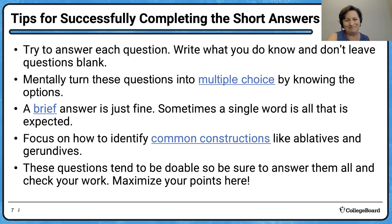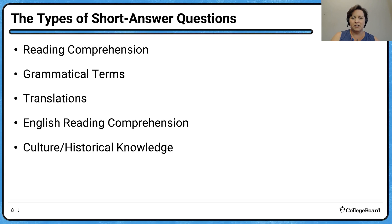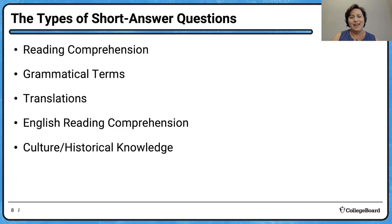Some types of questions you'll encounter: reading comprehension questions where you look at a section and answer what's happening; grammatical terminology questions; translation questions — often paired in A/B format; and short answer questions about English readings or Roman cultural and historical knowledge. For those culture questions, the advice about writing what you know is great — if you don't remember exactly what Egyptian queen is referenced, you know Cleopatra is an Egyptian queen, so that's probably the one.